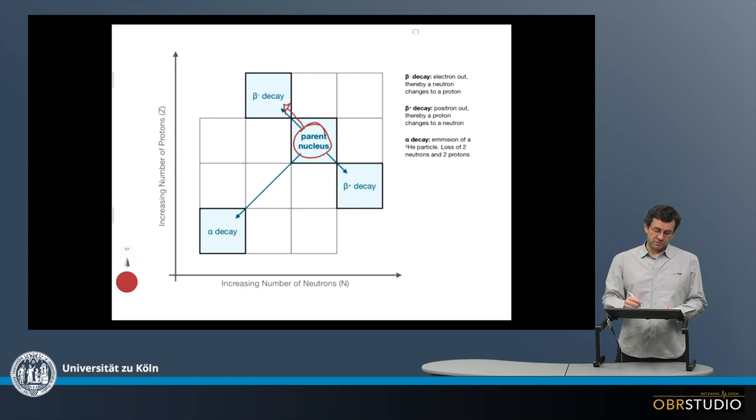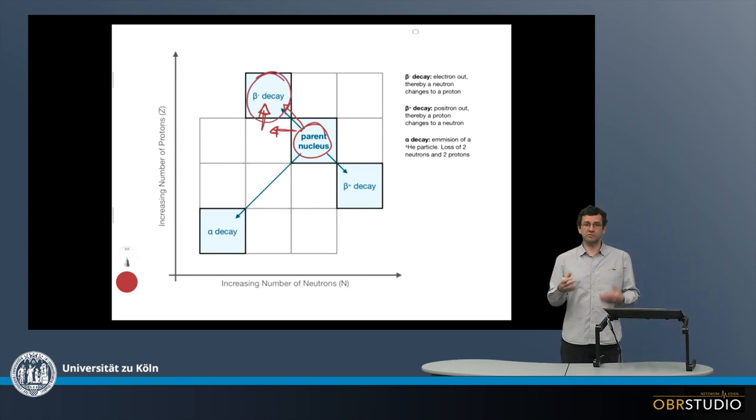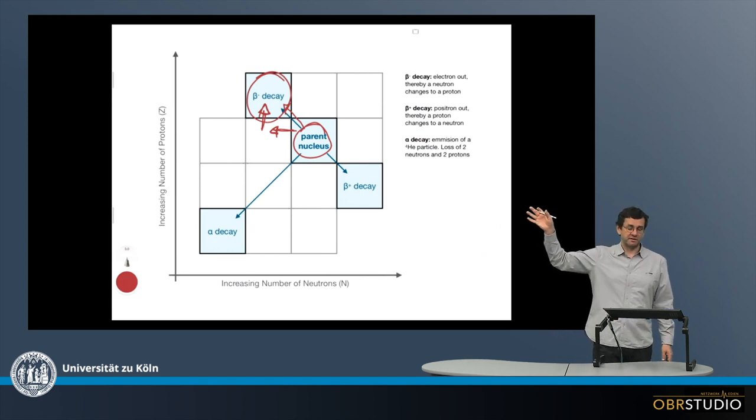So changing a neutron into a proton means the nucleus loses one neutron but gains one proton. It goes first to the left, losing one neutron, then up, gaining one proton. And then we have this nuclide here, which has one proton more, which means it is another element now.